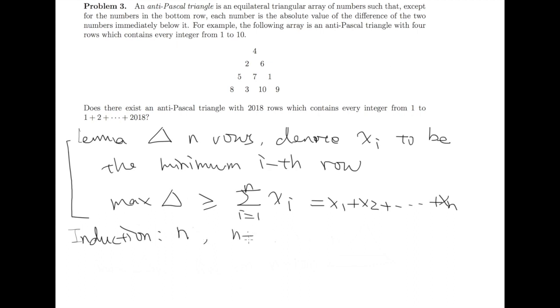Assume it works for n. Let's consider n+1. We now have an n+1 row anti-Pascal triangle. If we only look at the top n rows, it's still an anti-Pascal triangle. So we can use induction on these top n rows, which means the max among these top n rows (I use delta_n to denote the first n rows) is larger than the sum of x_i, the minimum of each row in the top n rows.